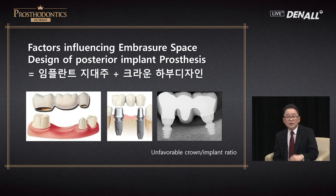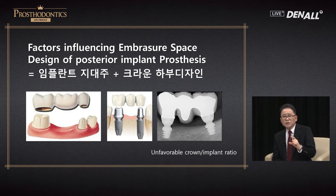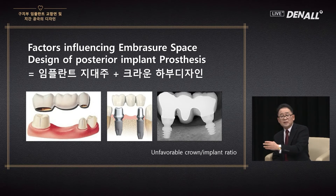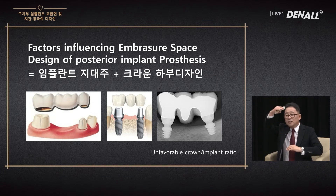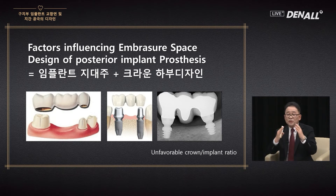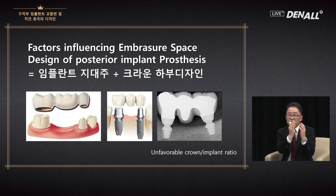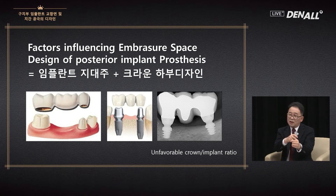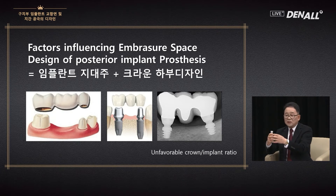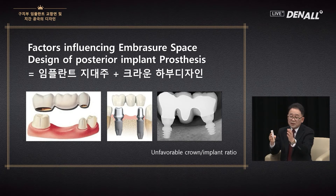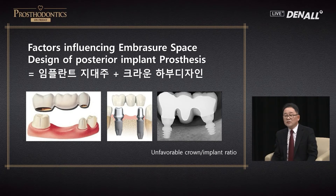The embrasure space is influenced by the implant abutment and how you design the bottom part of a crown. Implants are placed in severely resorbed bone, so if a short implant is placed, the crown-implant ratio is very big. Therefore, the embrasure compared to the natural tooth tends to get bigger. In the case of a premolar, when you place a regular implant, the diameter is similar. However, in the molar area, the embrasure space needs to be higher and bigger.